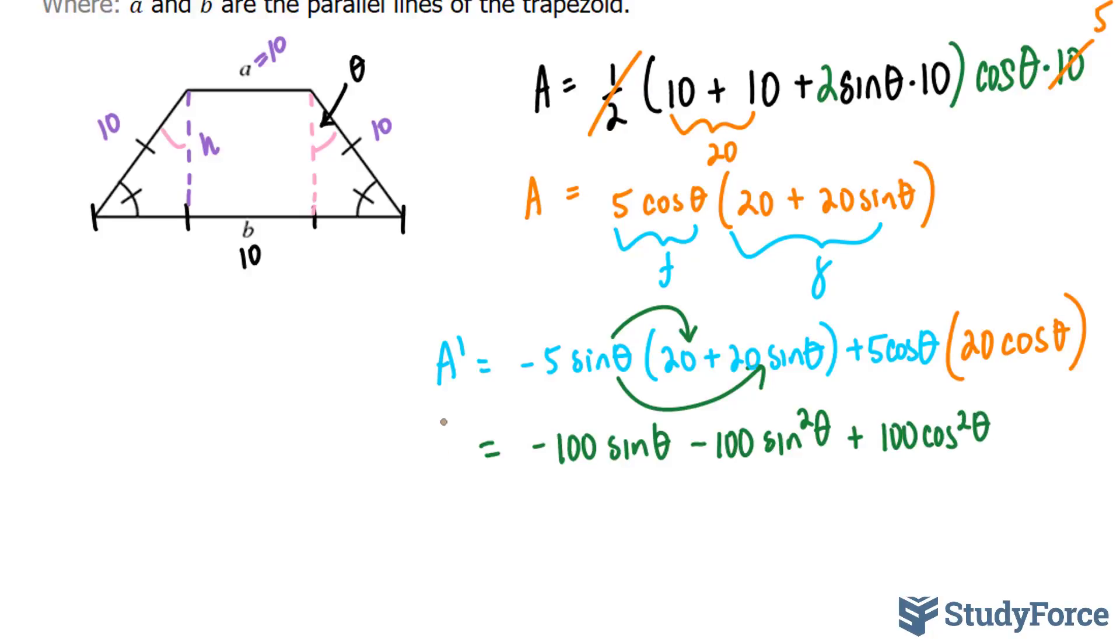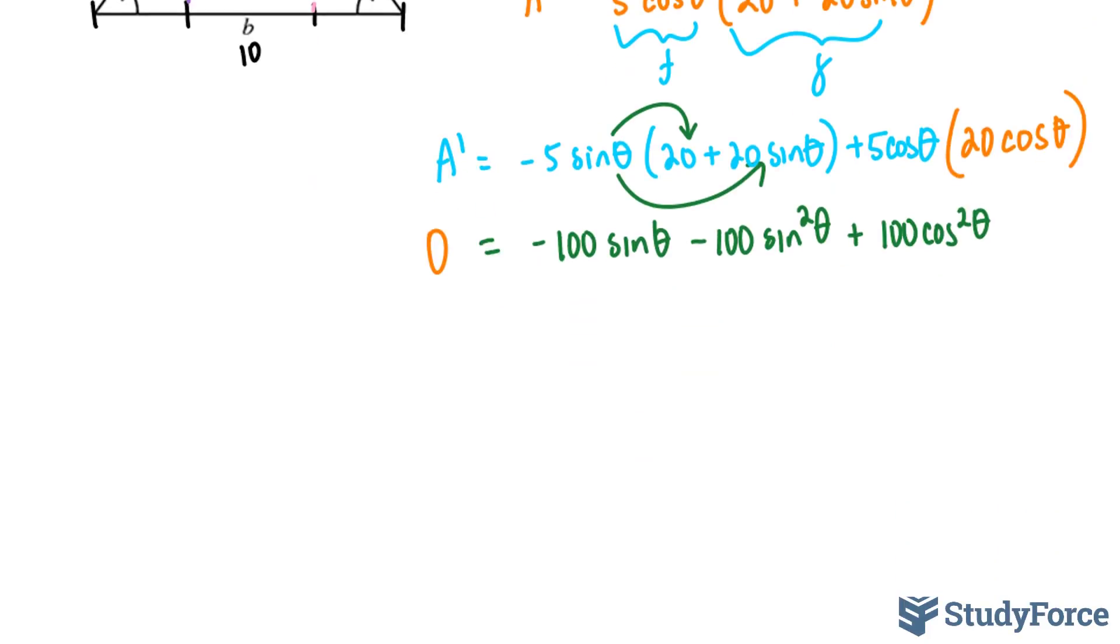Now I'll set my equation equal to 0 to find the critical points. You'll notice that each one of these three terms has a 100, so I can divide the whole equation by 100 to get rid of them. And by doing that, the left side remains as 0, this becomes negative sine theta, this becomes negative sine squared theta, and this becomes plus cosine squared theta.